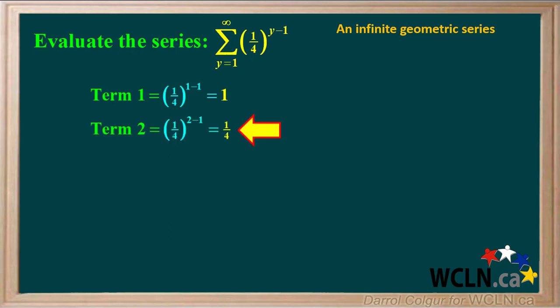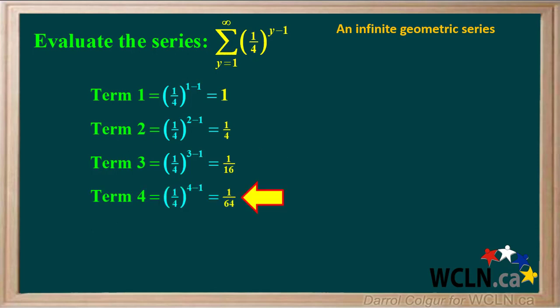For term 2, we put in 2 for y, so we get 1 quarter to the power 1, or 1 quarter. For term 3, we put in 3 for y, and we get 1 quarter to the power 2, or 1 sixteenth. For term 4, we put in 4 for y, and we get 1 quarter to the power 3, or 1 64th.